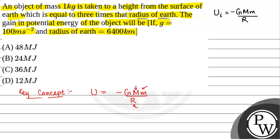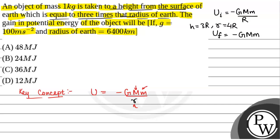When the object is taken to a height from the surface of the earth which is equal to 3 times the radius of earth, that is h = 3R, so the distance from the center becomes small r = h + R = 3R + R = 4R. So the final potential energy will be -GMm/4R.